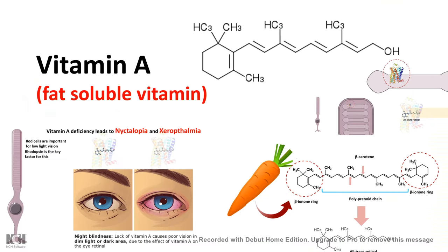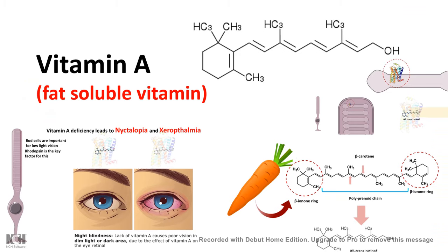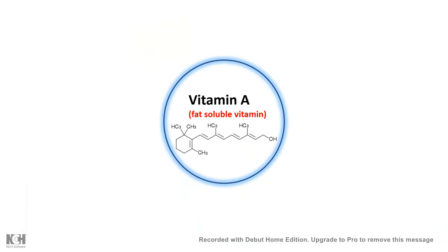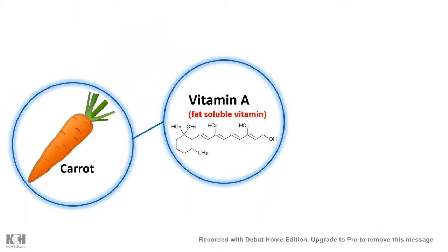Hi! In this video, we'll talk about vitamin A. Vitamin A is a fat-soluble vitamin, and vitamin A is derived from carrots. Carrots are the major source of vitamin A among the vegetables.